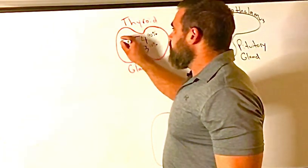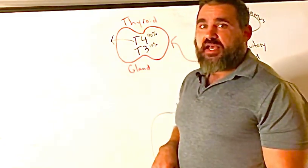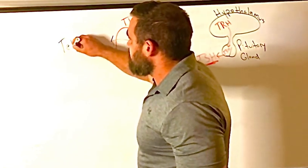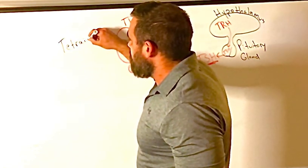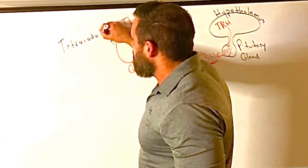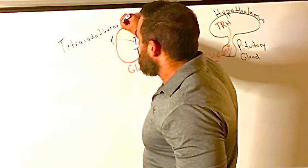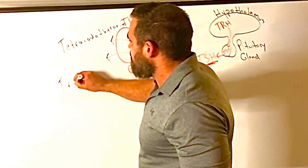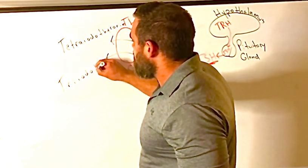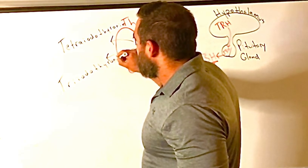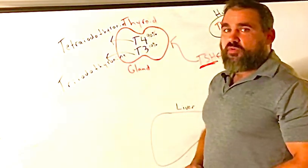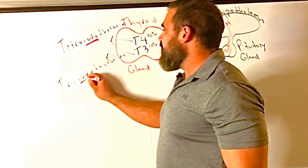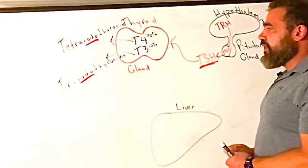T4 stands for tetraiodothyronine—nice long word, tetraiodothyronine. And then T3 stands for triiodothyronine. What's important about those names? Iodo. Iodo refers to iodine. We have to have iodine to synthesize thyroid hormone.